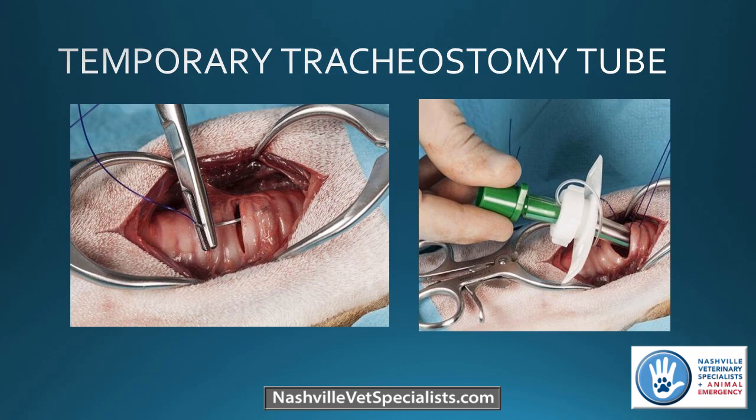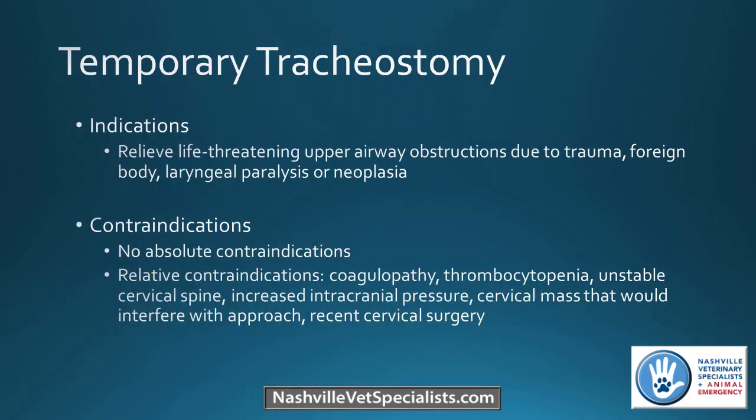Now we'll talk about temporary tracheostomy tube placement. Indications include life-threatening upper airway obstructions — commonly seen in brachycephalic patients — foreign bodies lodged in the trachea, laryngeal paralysis, or a large mass on the larynx. Anything causing upper airway obstruction that needs to be bypassed is a good indication. Similar to other procedures, there are no absolute contraindications. In a life-threatening situation, relative contraindications such as recent neck surgery or increased intracranial pressure are set aside.